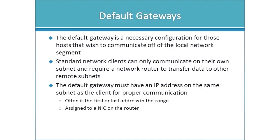The default gateway is often the first or last address in the range, such as 192.168.1.1 or 1.254. It's actually an address assigned to a network interface on a router. Clients are configured to forward any packets destined for remote subnet IP addresses to their default gateway.